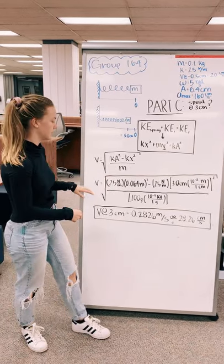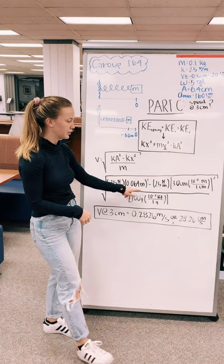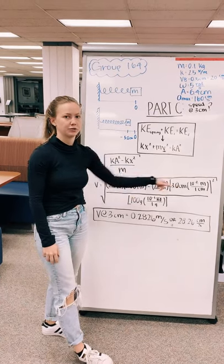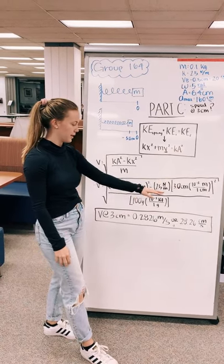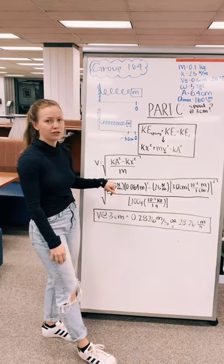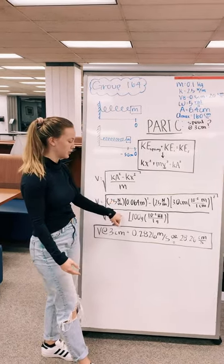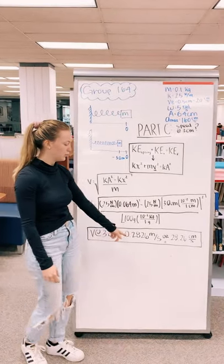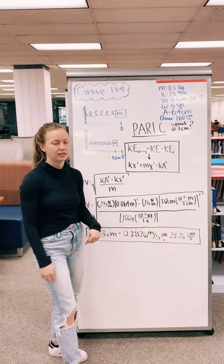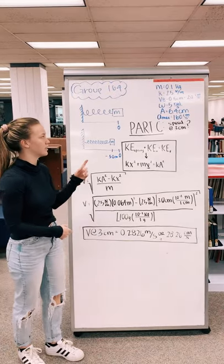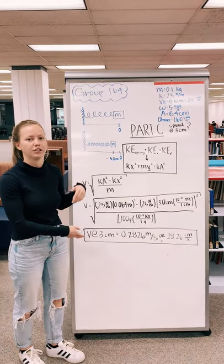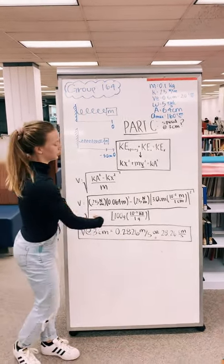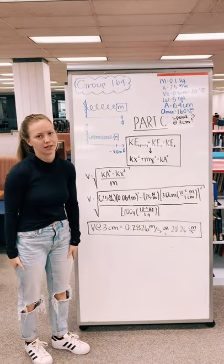We want this to be in standard units so we use meters instead of centimeters—we have to make sure that all of our units are the same throughout. Since we have Newtons which is in kilograms, we have to make sure at the bottom here that we have kilograms as well. When we solve this we get 0.2826 meters per second, and if we convert this back into centimeters, which is what our initial question was in, we get 28.26 centimeters per second.